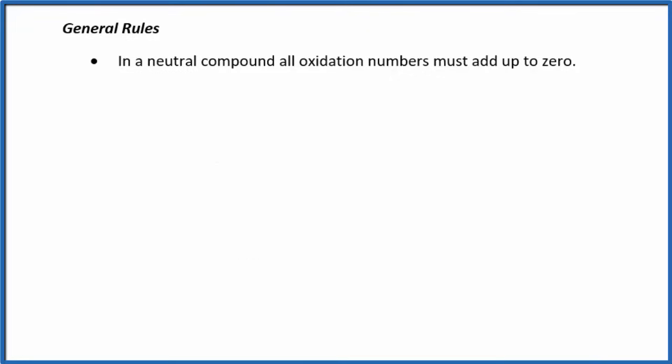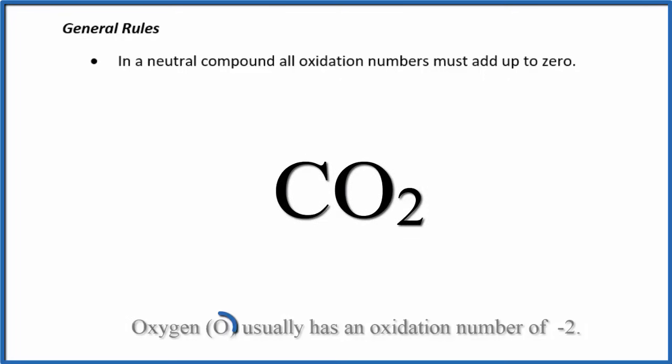So let's find the oxidation numbers for a neutral compound, CO2 carbon dioxide. We'll learn later that oxygen usually has an oxidation number of minus 2. So based on this information, and the fact that the oxidation numbers for all the atoms in a neutral compound have to add up to 0, pause and figure out the oxidation number on the carbon in CO2.